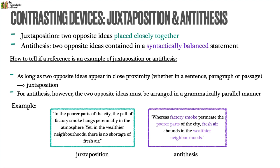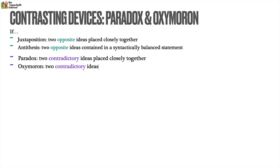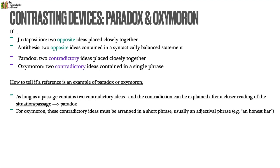If juxtaposition and antithesis deal with opposite ideas, paradox and oxymoron deal with contradictory ideas. Paradox is when two contradictory ideas are placed together, but oxymoron is more specific — when two contradictory ideas are contained in a single phrase. With paradox, as long as a passage contains two contradictory ideas, and the contradiction can be explained after close reading, then it's paradox. If we can't explain it, then it would just be an illogicality. Whereas an oxymoron has to be arranged in a short adjectival phrase — for example, 'an honest liar.'